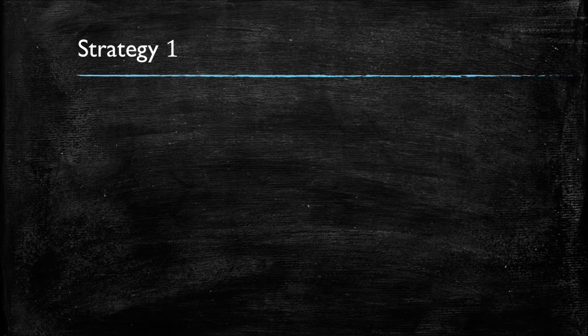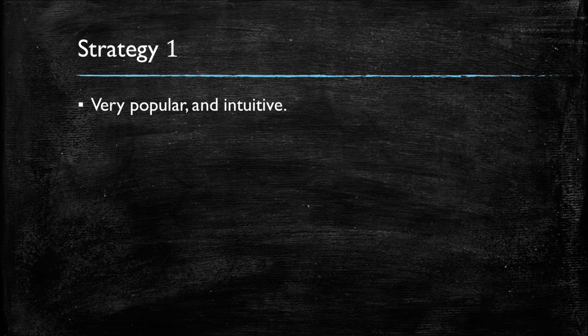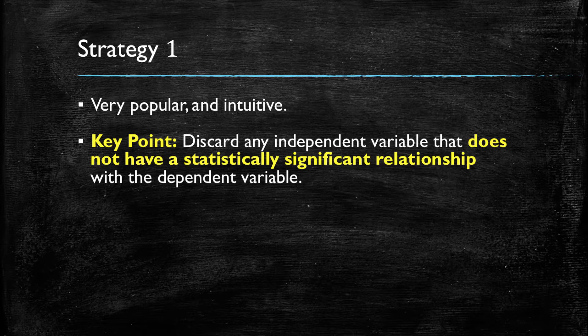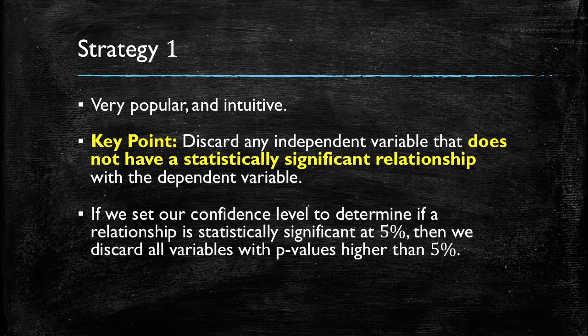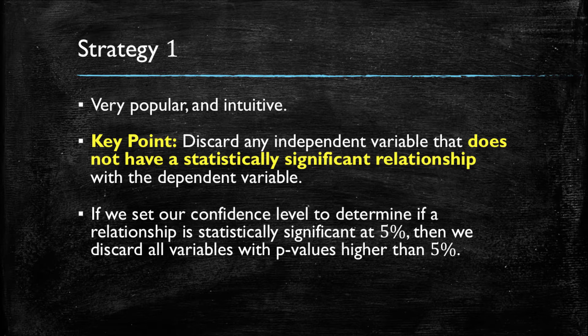Let's discuss our first strategy more in depth. As we had mentioned, it is very popular and somewhat intuitive. The key point of this strategy is to discard any independent variable that does not have a statistically significant relationship with the dependent variable. So the next question is, how do we determine if there's a statistically significant relationship? And for this, we must first decide what confidence level do we need in order to establish that there's a relationship. For example, if we determine that we want a 5% level, then we can use a factor such as the p-value and say, if the p-value is higher than 5%, we will discard a particular variable.